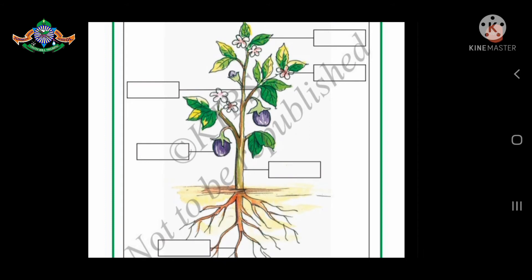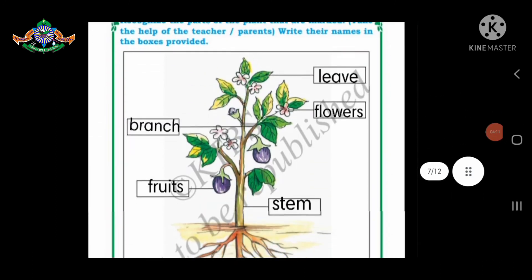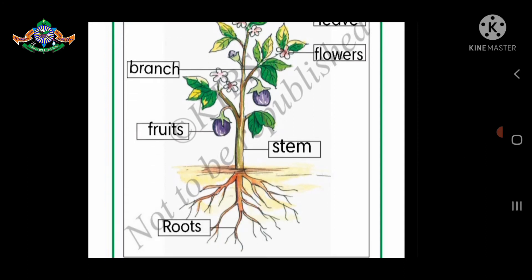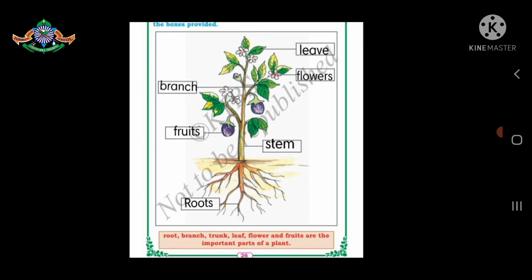You already know the parts of plants. Now you have to write their names. So this is leaf, flower, branch, fruit, trunk — also called stem — and roots. Like this, you have to write in your textbook. These are the important parts of plants.